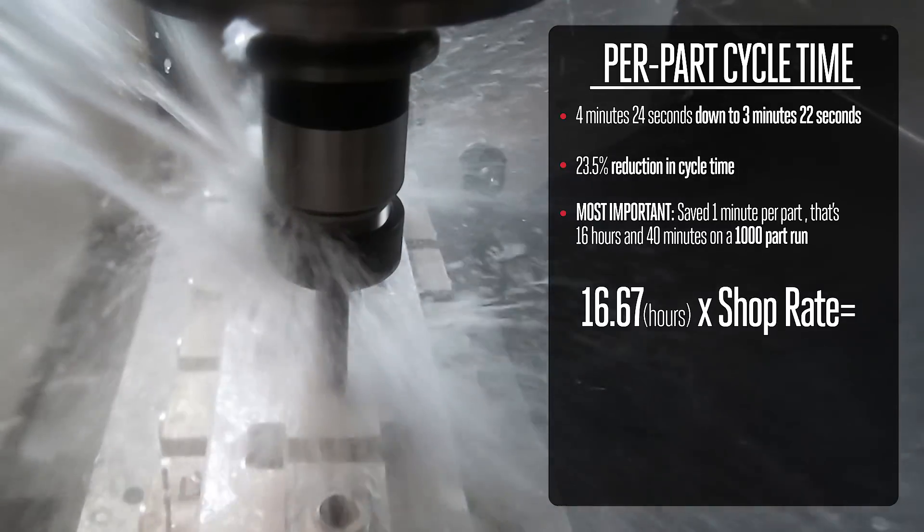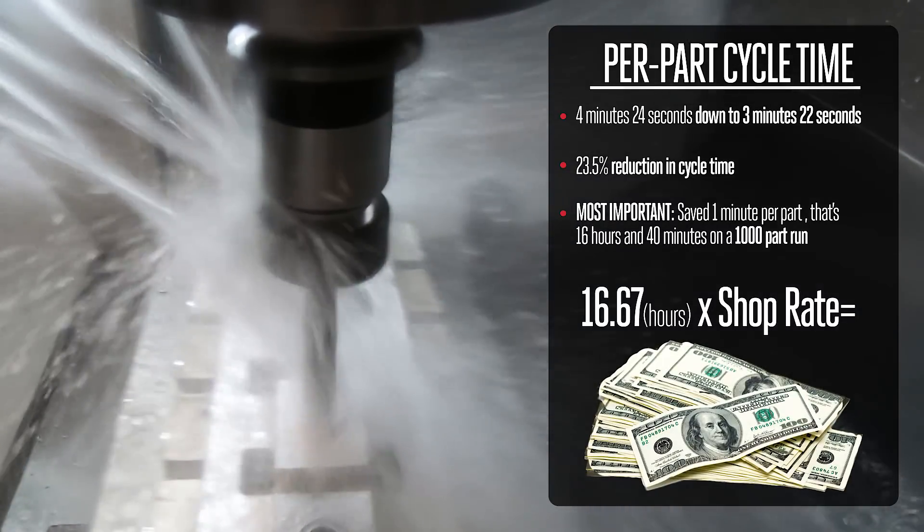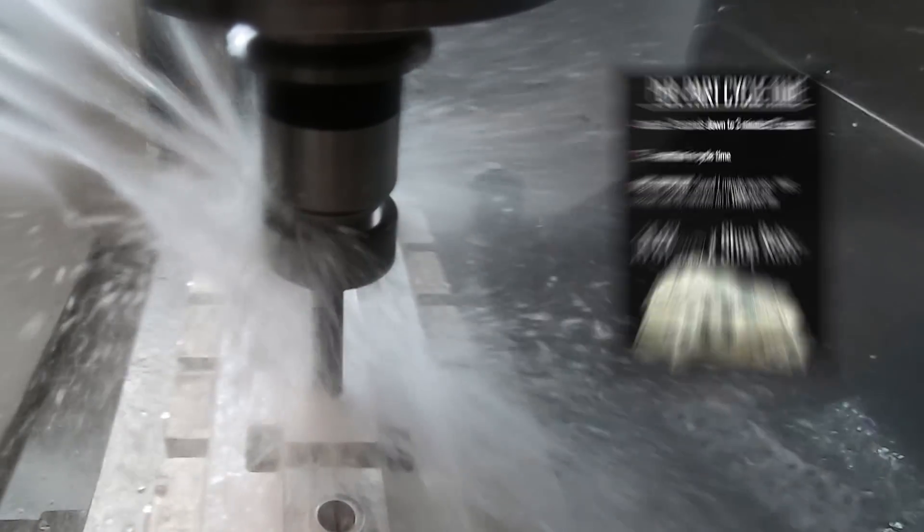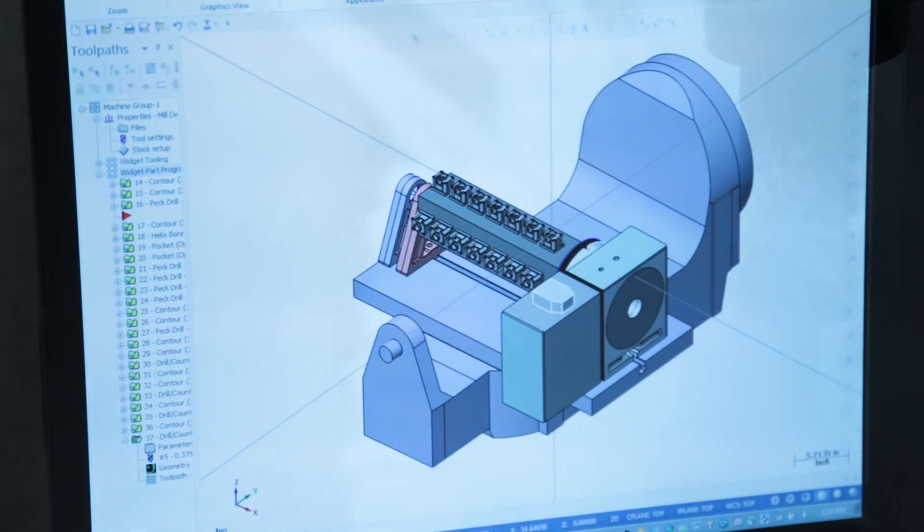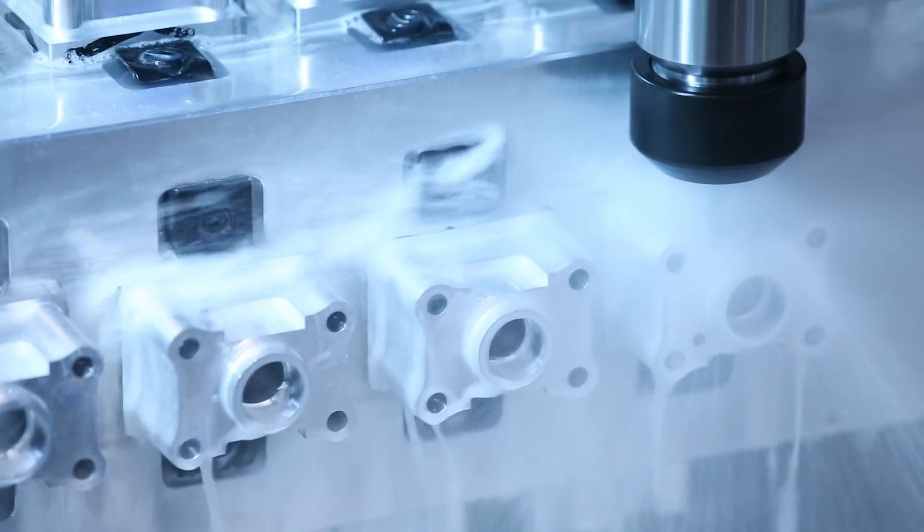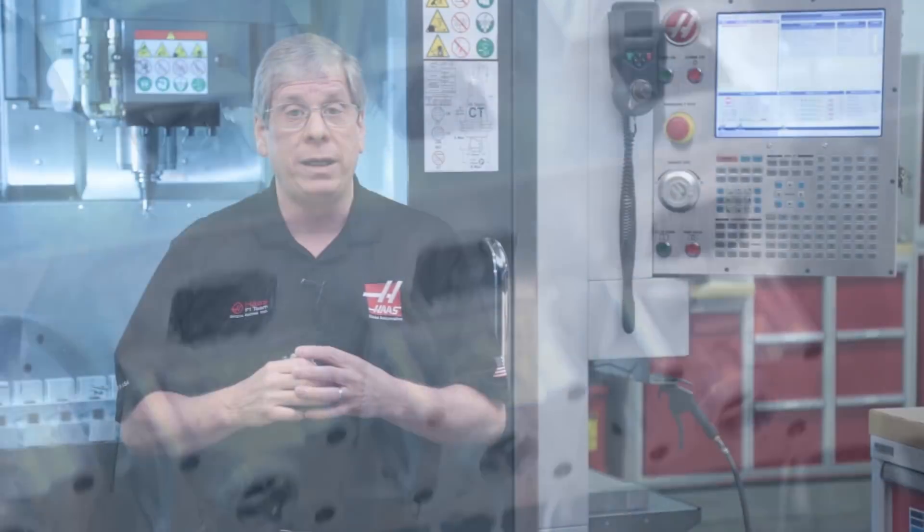Multiply that by your shop rate and you'll see that's real money. Now, there are costs associated with programming and cutting the fixture, so you'll need to analyze your situation. But multi-part fixtures with M97 subprogram calls can definitely save you time and money.